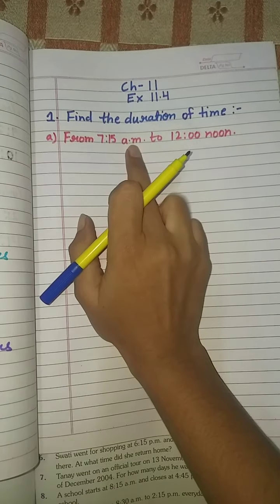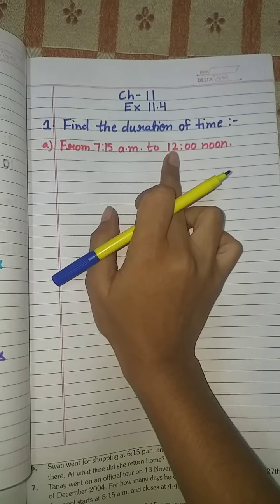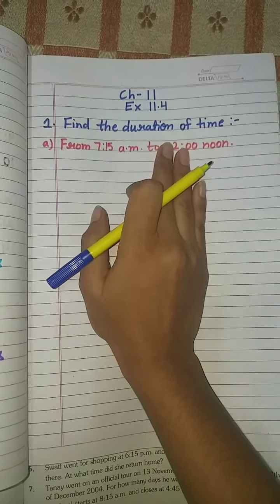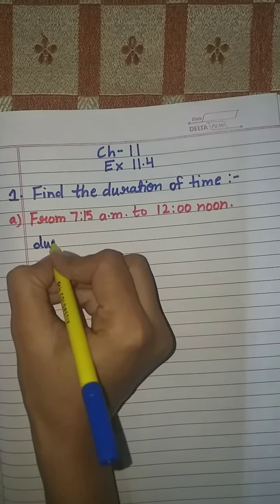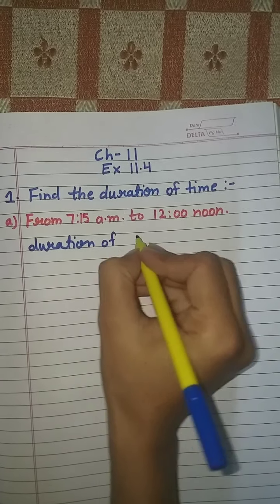From 7:15 a.m. to 12 noon - noon means afternoon. We have to find duration of time. Let me tell you how. This is your question one from Exercise 11.4. Now first we will write down duration of time.